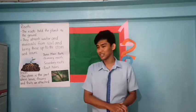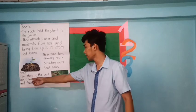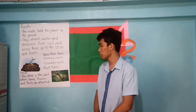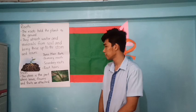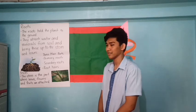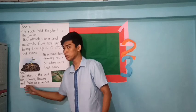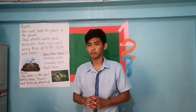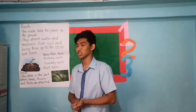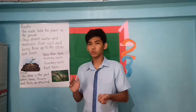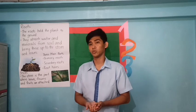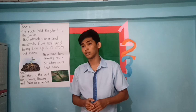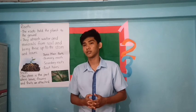Now let's go to the stem. The stem is the part where leaves, flowers, and fruits are attached. Is the stem connected to the roots? Yes, it is connected. There are two kinds of stems: the woody stem and the herbaceous stem.